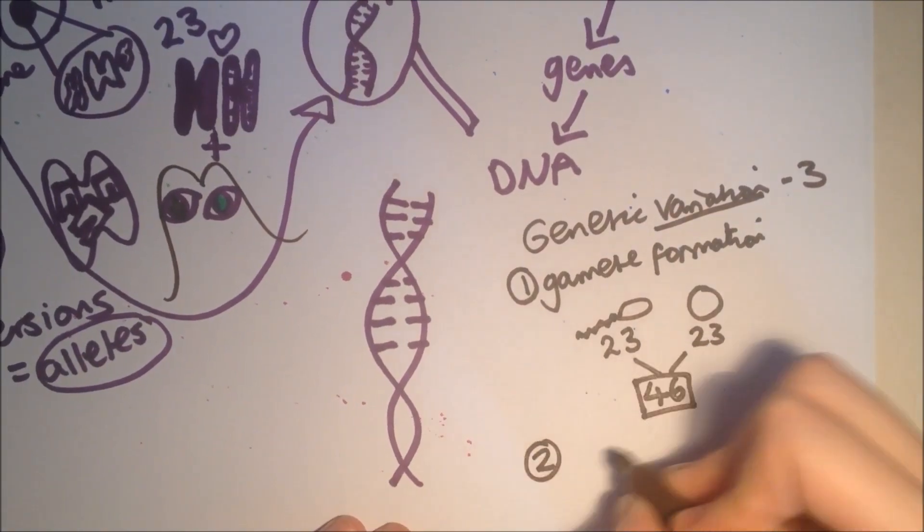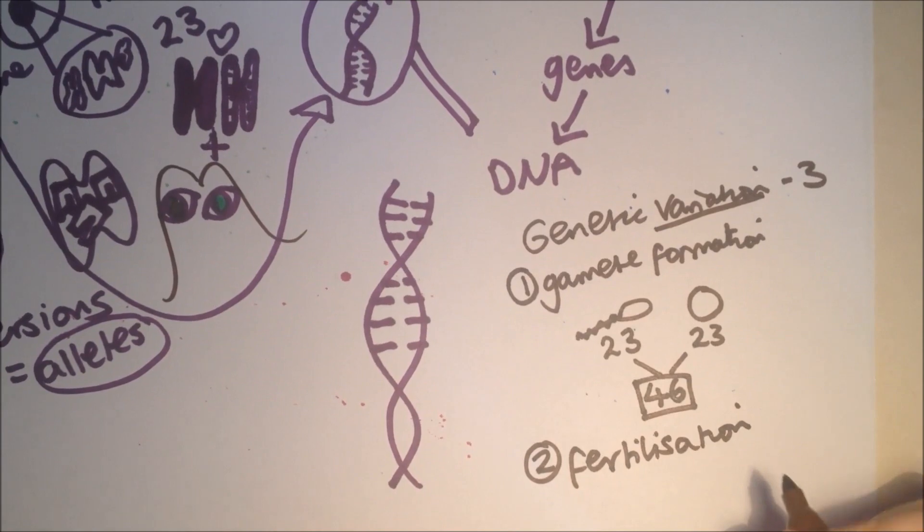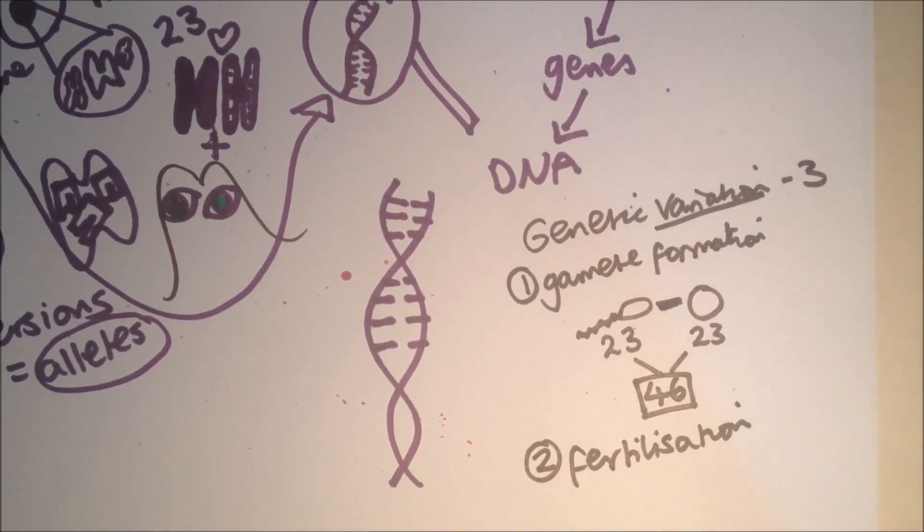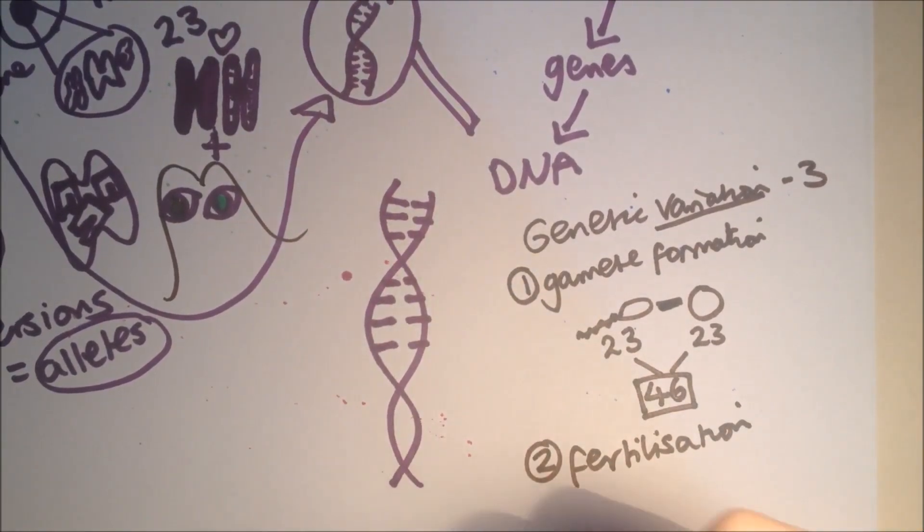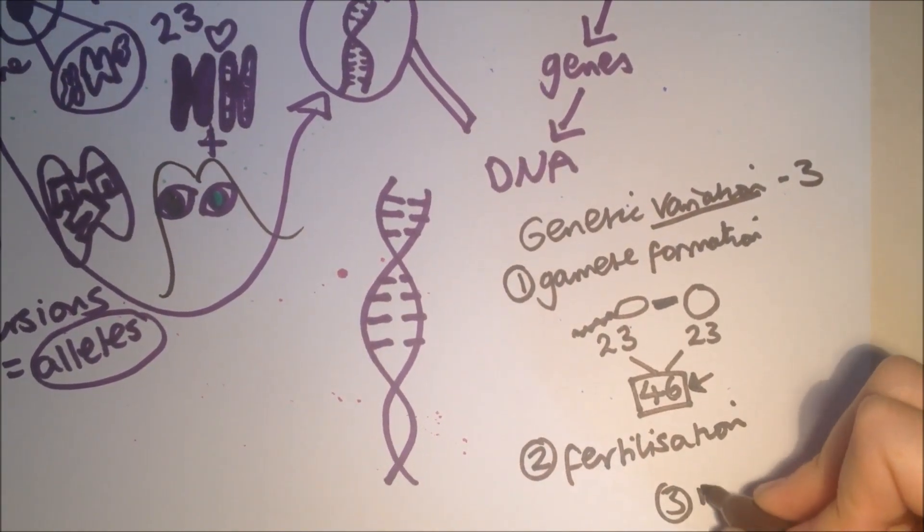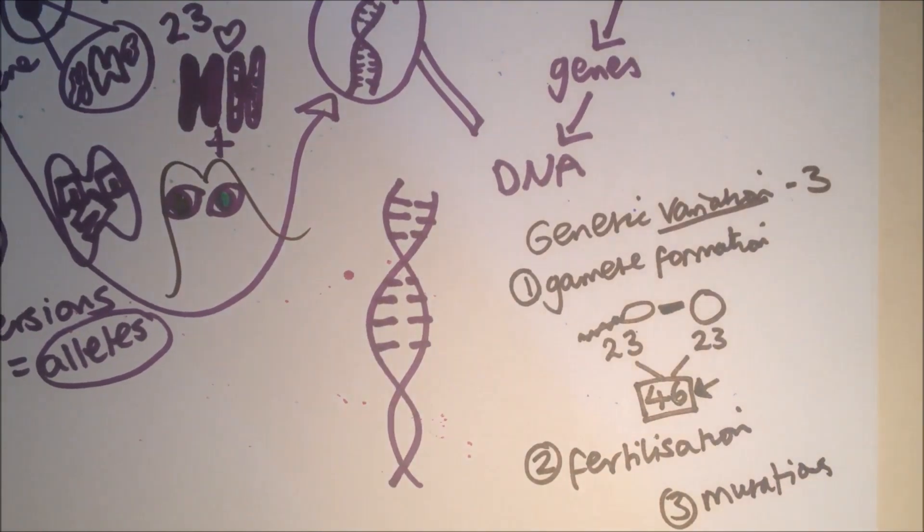It's fertilization where the gametes join together to form the 46 chromosomes. But it's a bit random, so you don't know which 46 are going to join together. The third genetic variation is mutation, which is changes to the genetic code, which is when a gene mutates, which just means it changes.